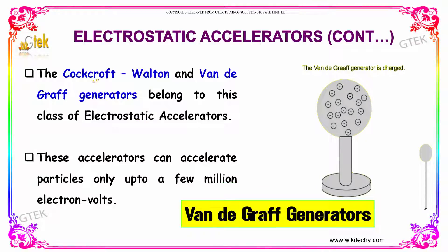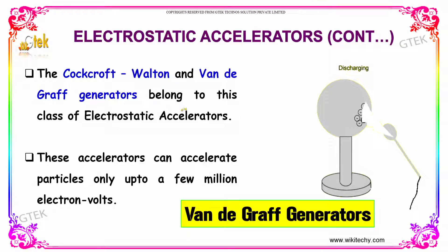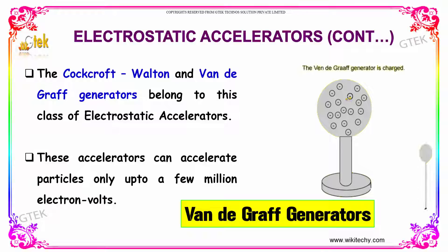The Cockcroft-Walton and Van de Graaff generator belong to the class of electrostatic accelerators. These accelerators can accelerate particles only up to a few million electron volts.